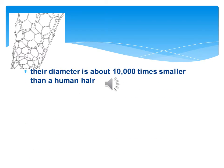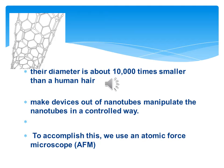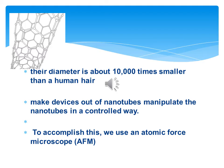Carbon nanotubes are really thin — their diameter is about 10,000 times smaller than that of a human hair. In order to make devices out of these nanotubes, it is important to be able to manipulate them in a controlled way. To accomplish this, we use an AFM, which is an atomic force microscope, to change their position, shape, and orientation, as well as to cut the carbon nanotubes into different sizes.